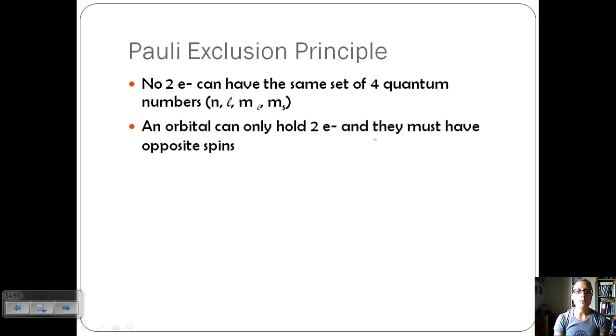An orbital can only hold two electrons, and then they must have opposite spins. An orbital is going to have the same N, L, and M sub L, except now it's going to have the two different M sub S values, and that's how we make sure that no electrons have the same four quantum numbers.